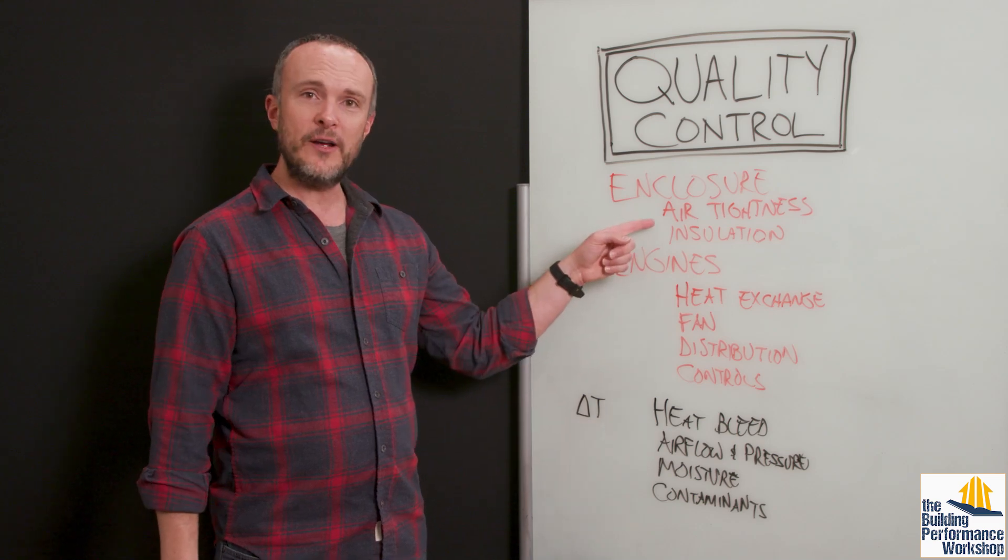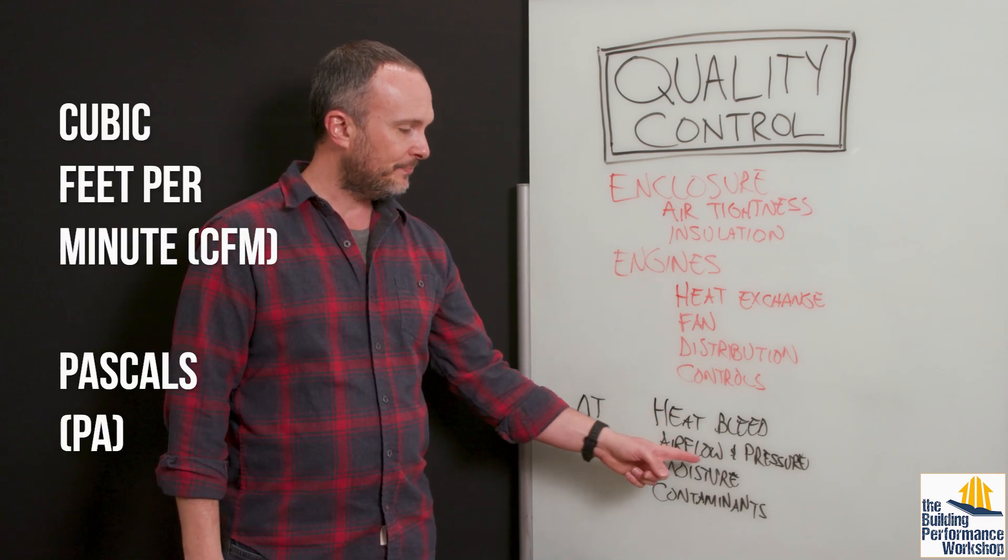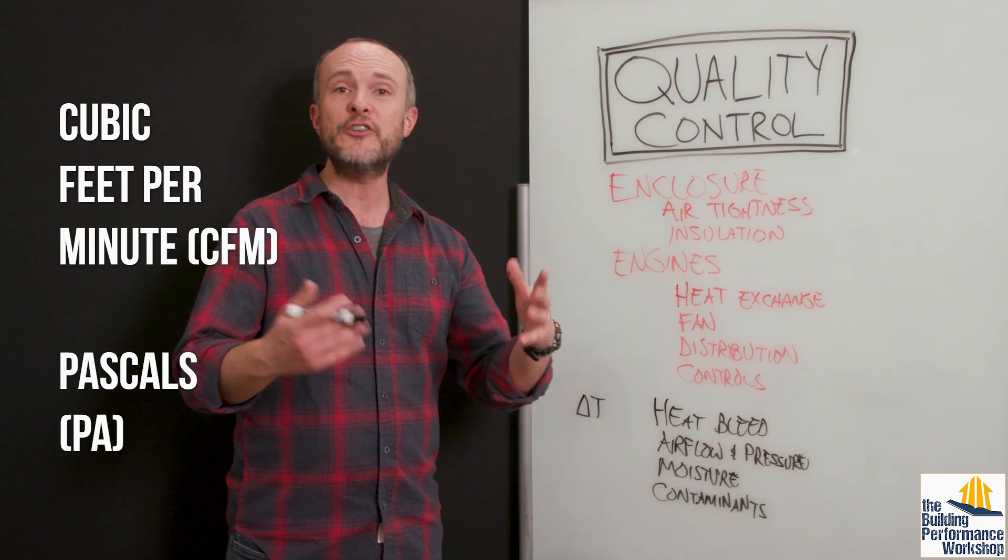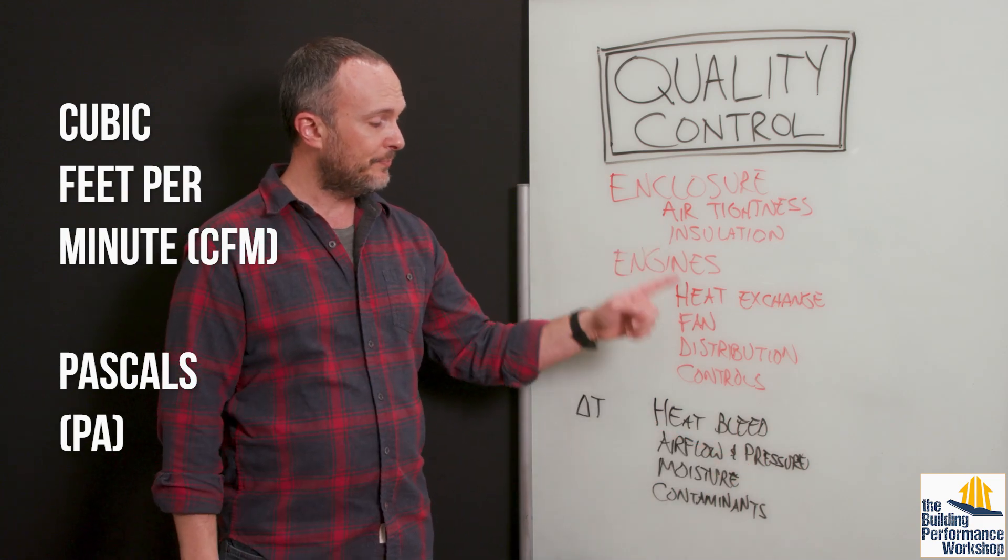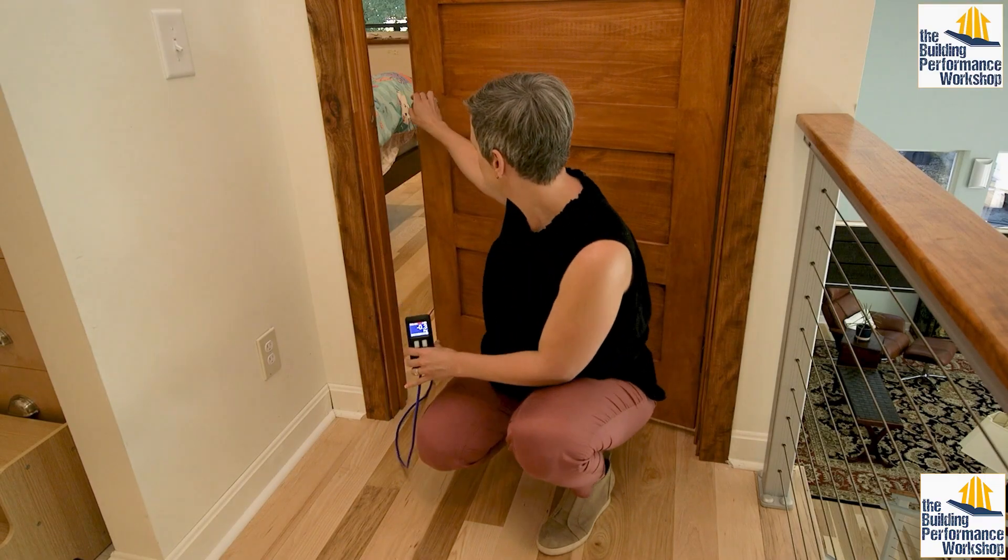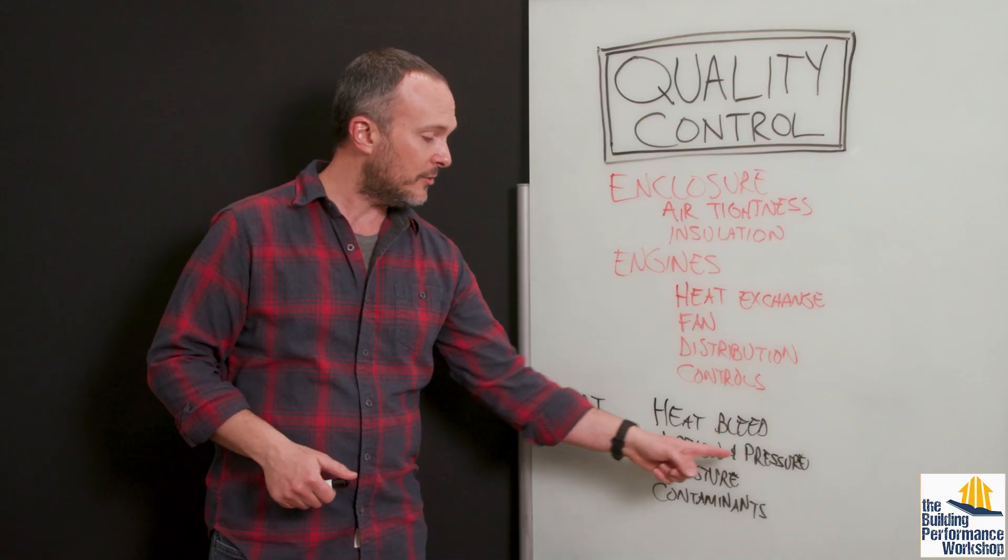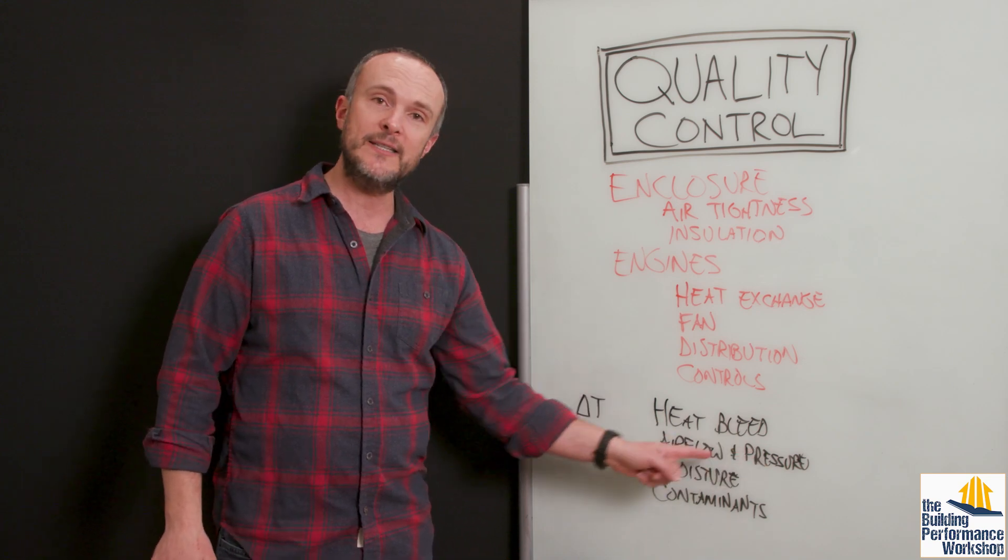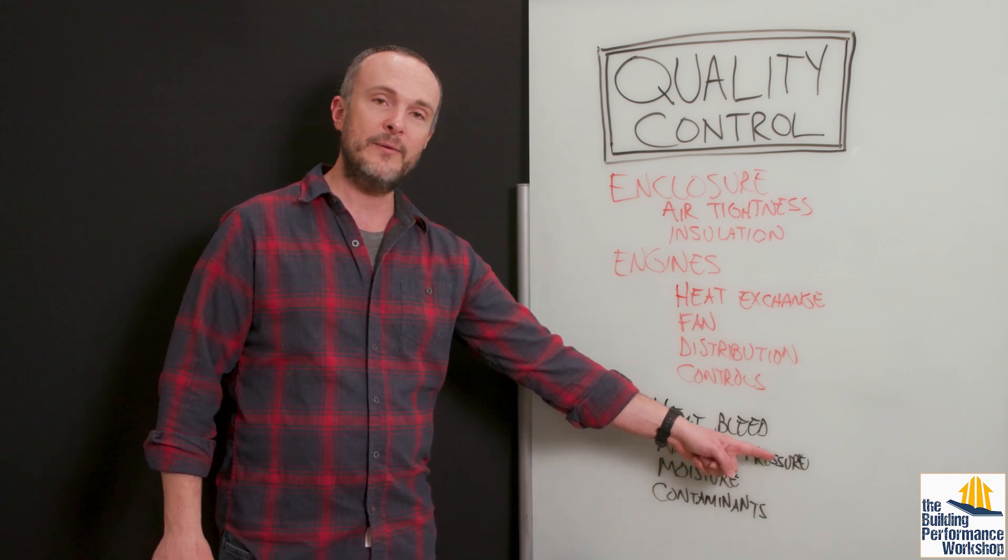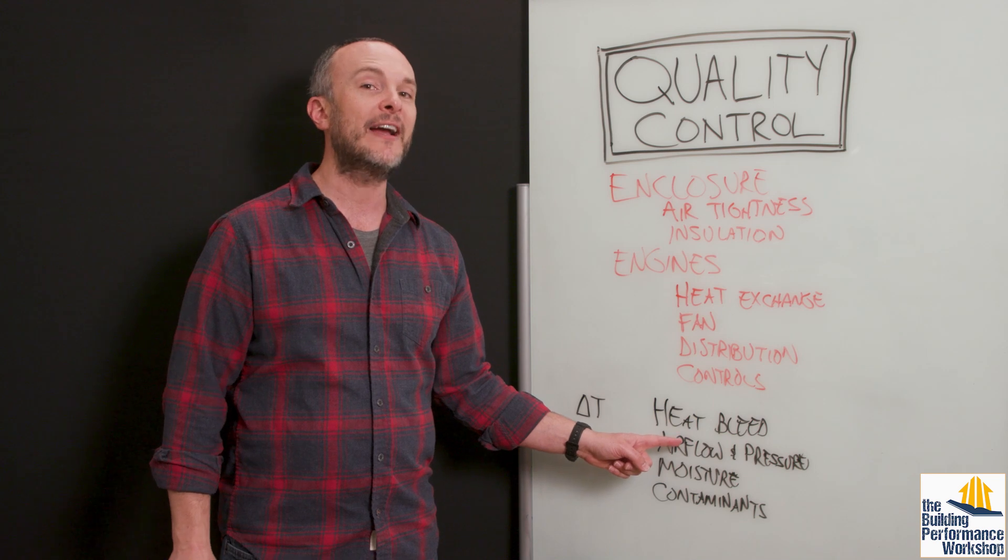Airflow and pressure. As far as the home goes, you're talking about CFM and Pascals. Measuring things like from room to room: is the pressure imbalance between rooms big enough that we're going to have a comfort problem and it's going to actually slow down the airflow? These are two sides of the same coin. And when you have one of them get out of whack, it's going to have effects on the other.